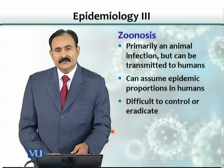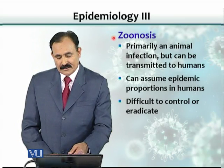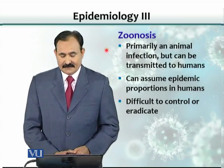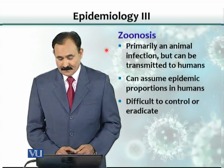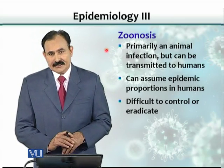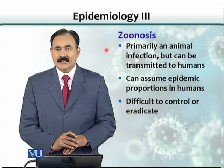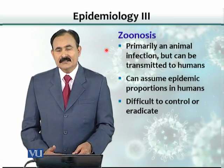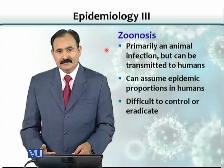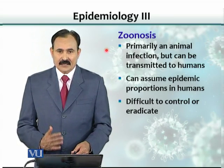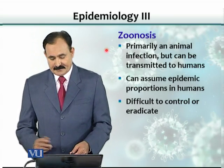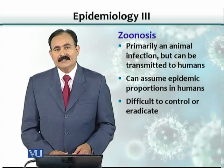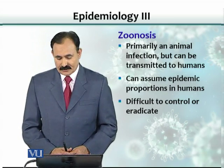Another important term is zoonosis. Zoonosis is primarily an animal infection, but the disease can be transmitted to humans. Once it is transmitted to humans, humans can then transmit the disease from one person to another. Zoonotic diseases are difficult to control.